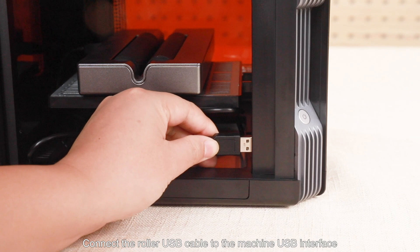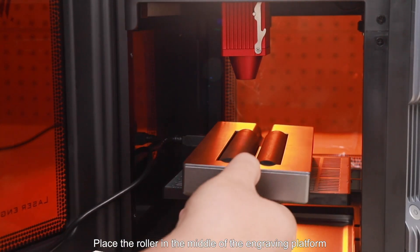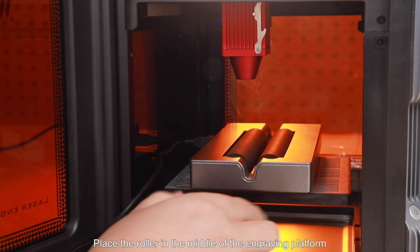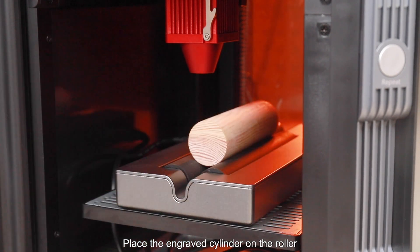Connect the roller USB cable to the machine USB interface. Place the roller in the middle of the engraving platform. Place the engraved cylinder on the roller.